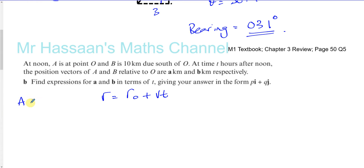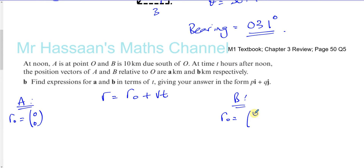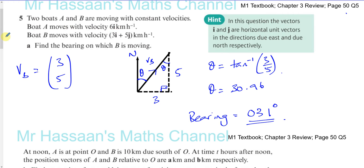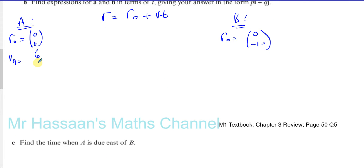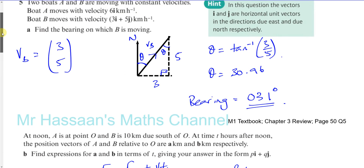So we need to know the initial positions for A and B. For A, its initial position is (0, 0) because it's at the origin. For B, its initial position is 10 kilometres due south of O, so it's (0, -10). The velocity of A was 6i km/h, so (6, 0). And the velocity of B is 3i plus 5j, so (3, 5).